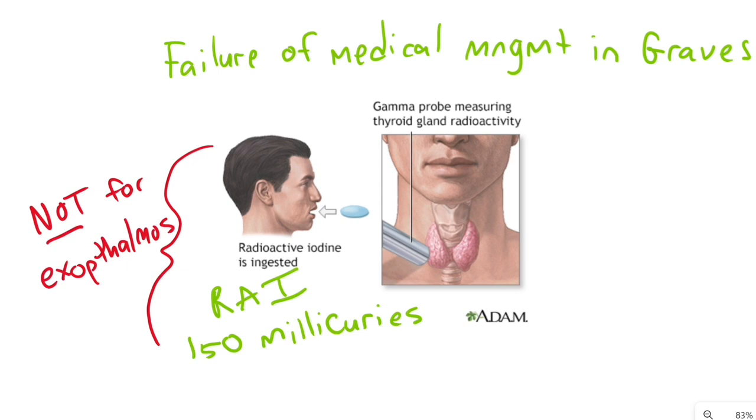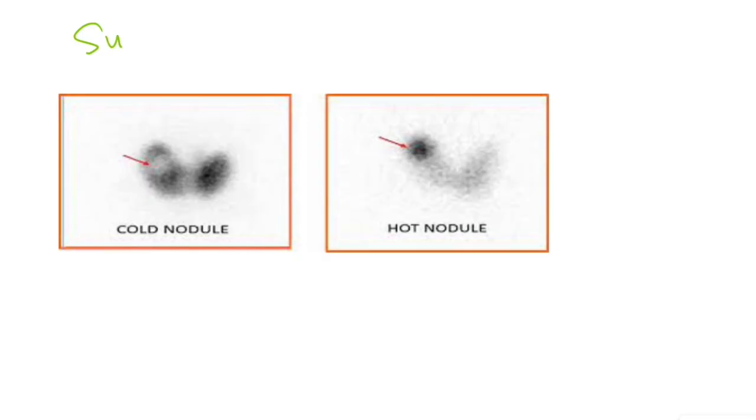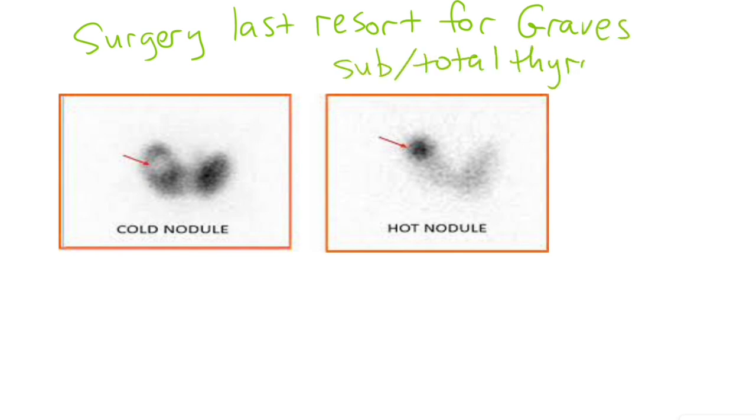The contraindications for using radioactive iodine in Graves is if the patient has Graves' eye disease since the scarring behind the eye can be worsened by the radioactive iodine. Also, if the patient is pregnant, since the radioactive iodine can destroy the baby's thyroid causing cretinism, or if the patient is a developing child themselves. Surgery would be the last resort for Graves' disease, but would be a subtotal or total thyroidectomy if medications and radioactive iodine did not work, or if the patient had contraindications to radioactive iodine.